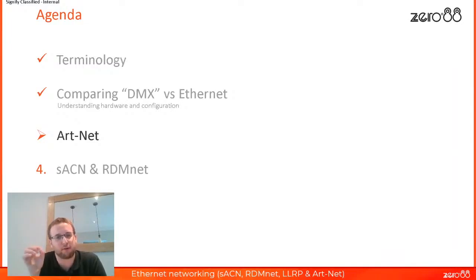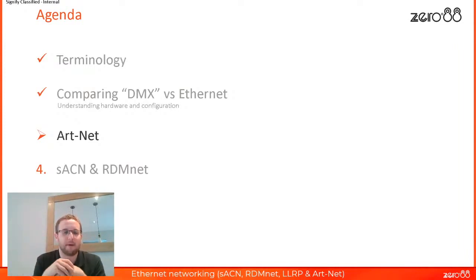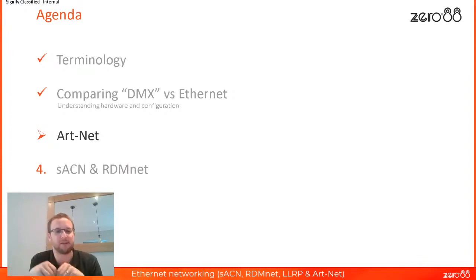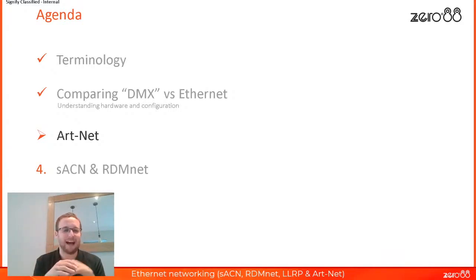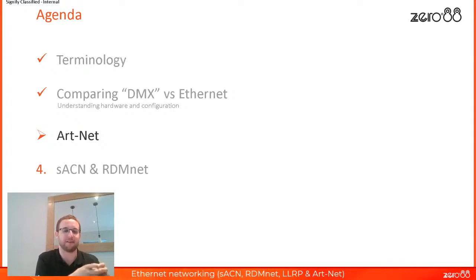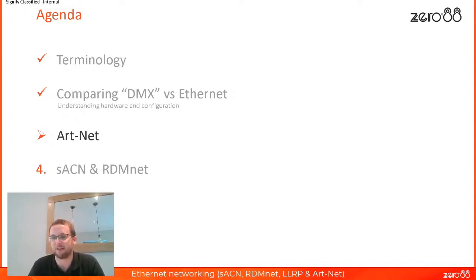Art-Net, Streaming ACN, and RDMnet are the actual protocols we send over Ethernet. What we've done so far is get devices talking to each other — given them the right rooms and names — but we haven't actually sent a message yet. Think of it like a train network: all the stations and tracks are Ethernet, but that's useless without putting people or cargo on the trains. Art-Net, Streaming ACN, and RDMnet are the different ways of getting content from one place to another over the Ethernet network.